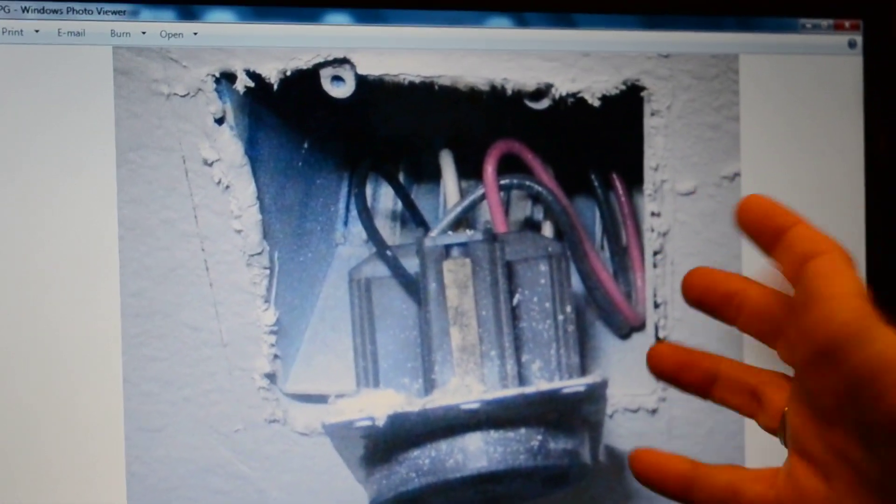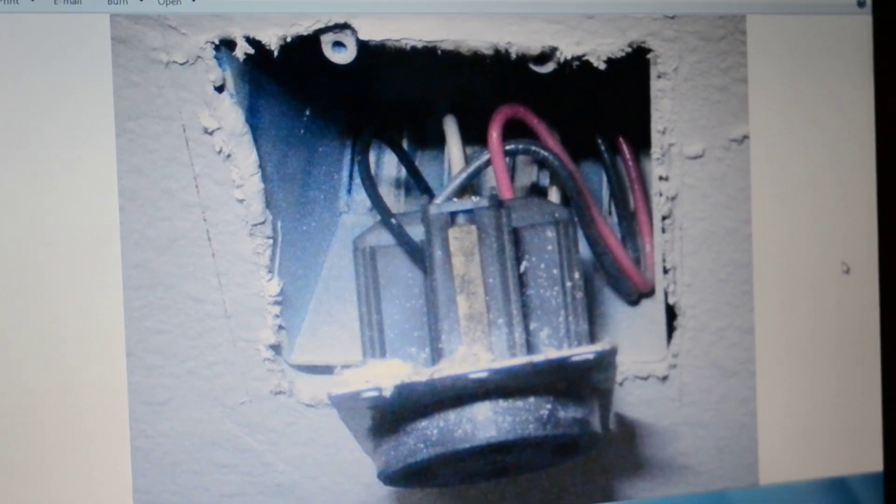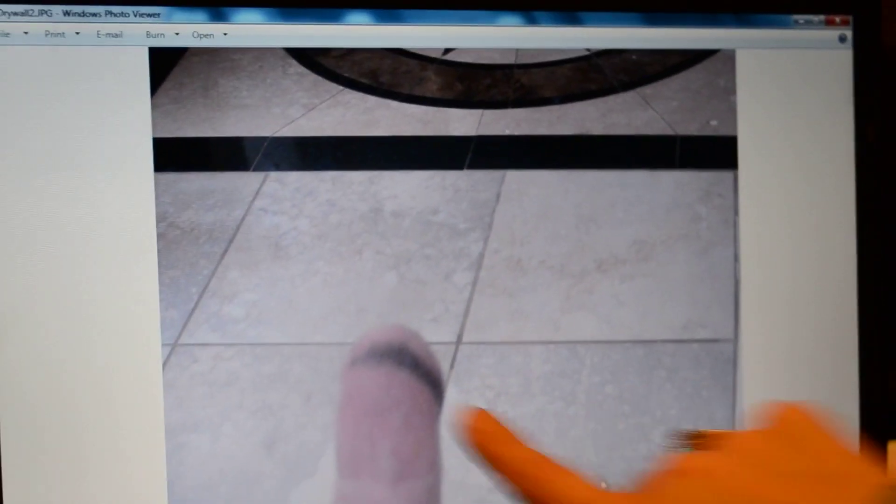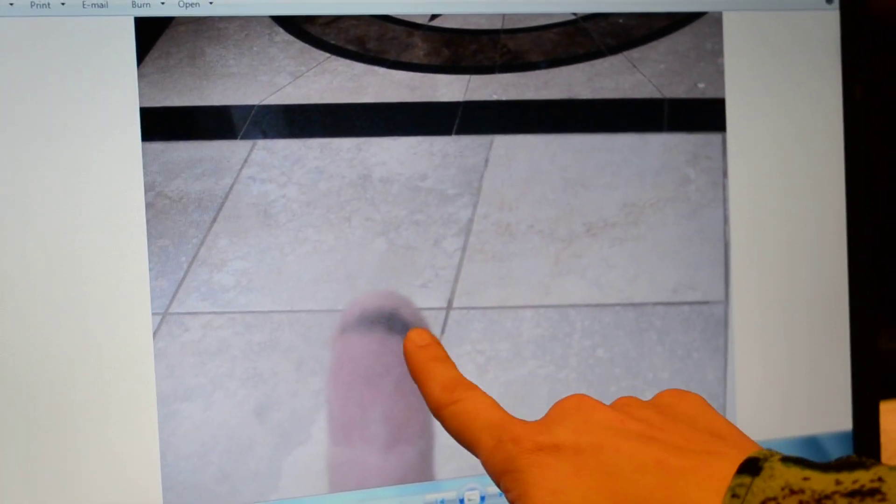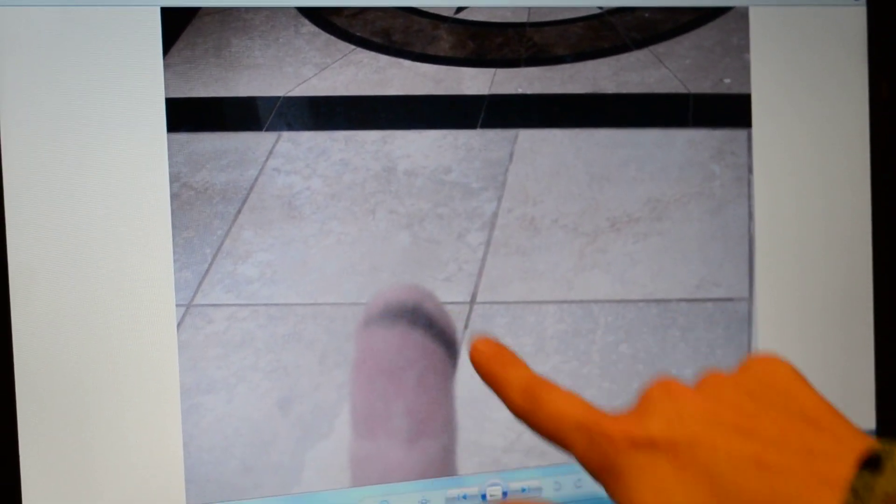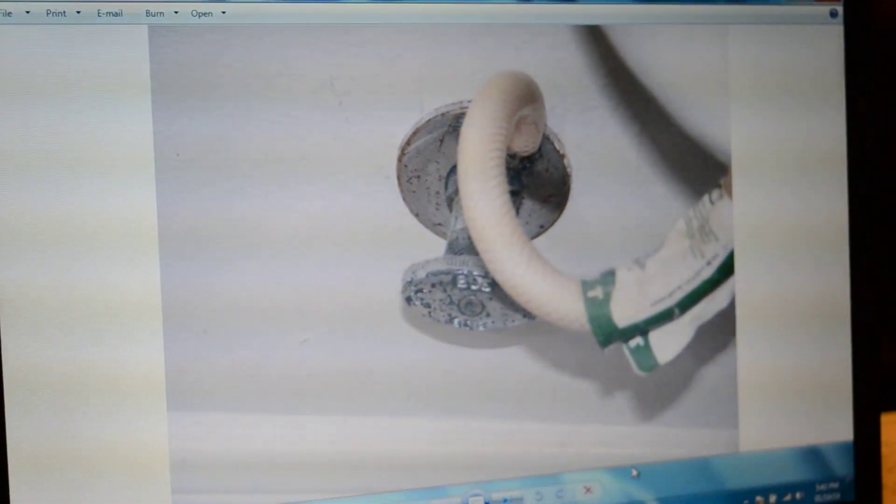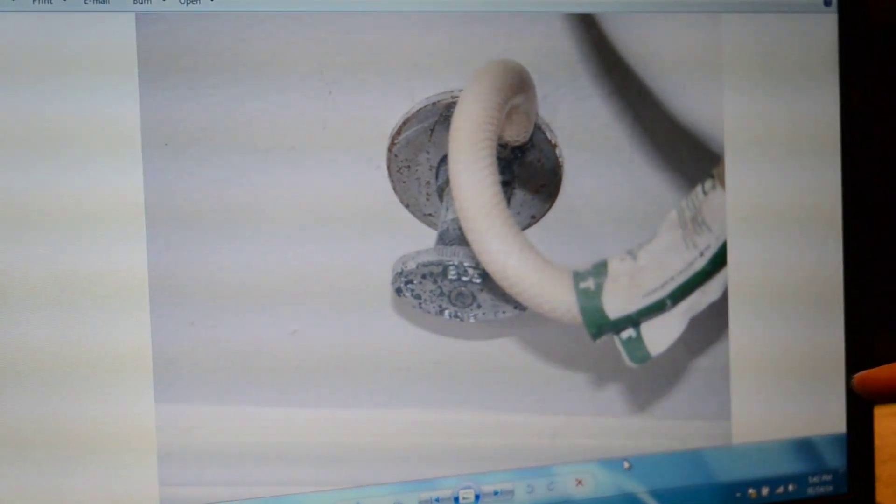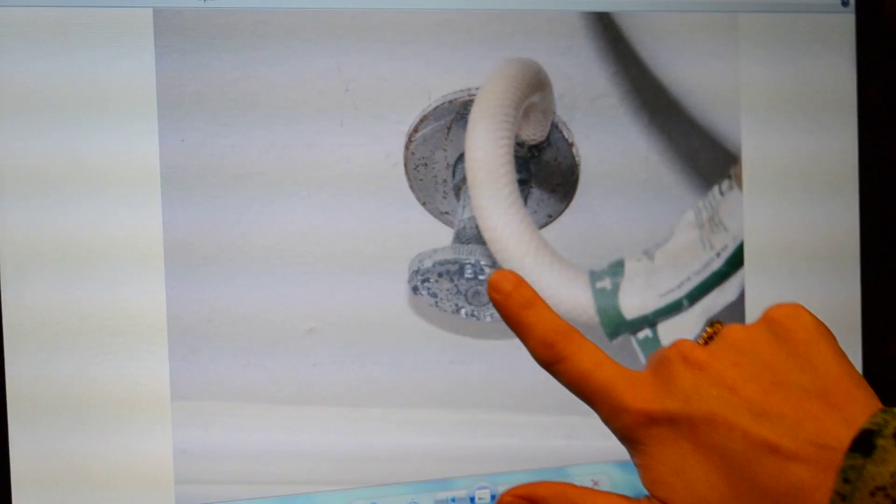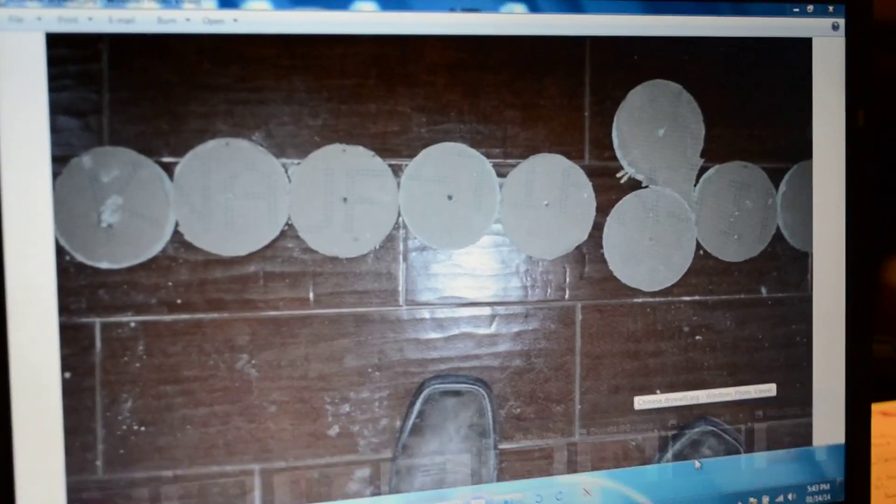The next picture is the dryer outlet, and you can see the ground wire is completely black. When the inspector rubbed his finger over the ground wire, some black soot came off. Other corrosion that will happen in the house—this is the shutoff valve for one of my commodes. You can see the pitting that's going on here and the rust happening around it.